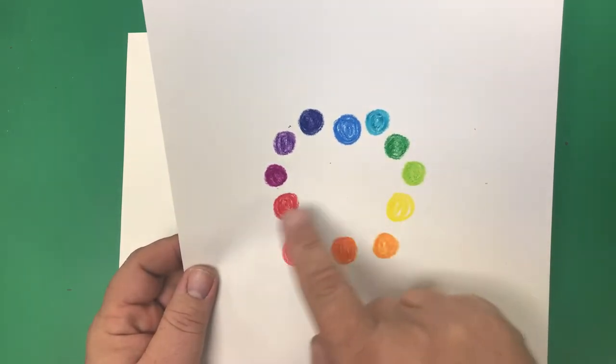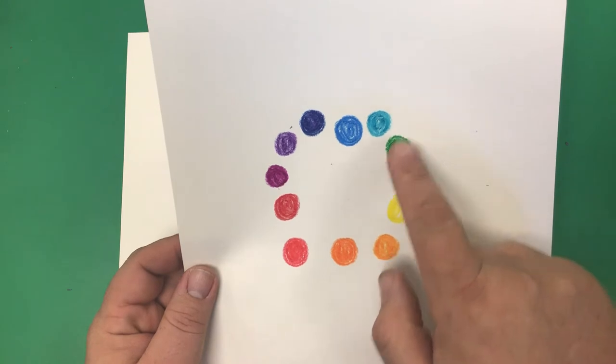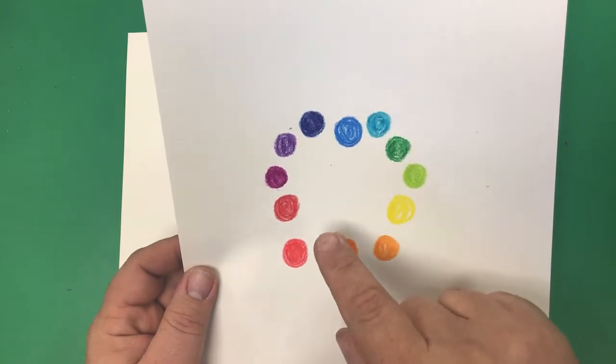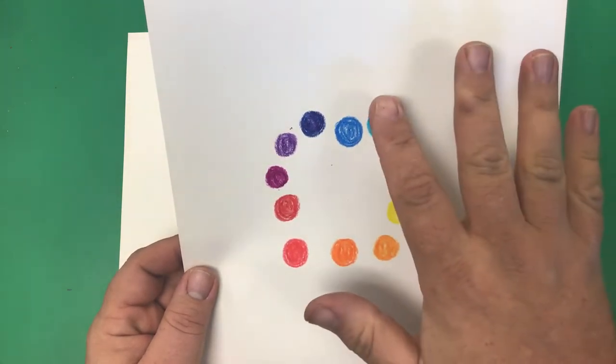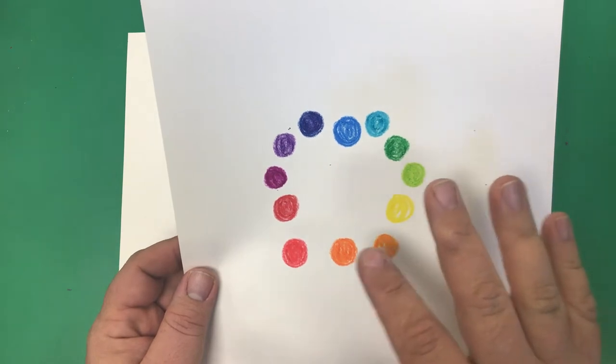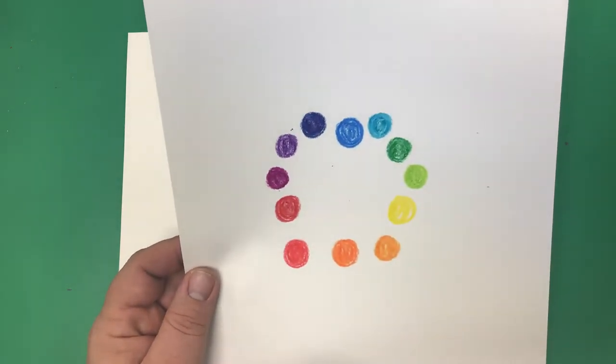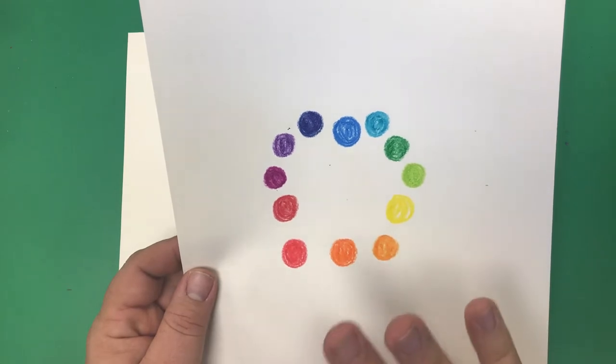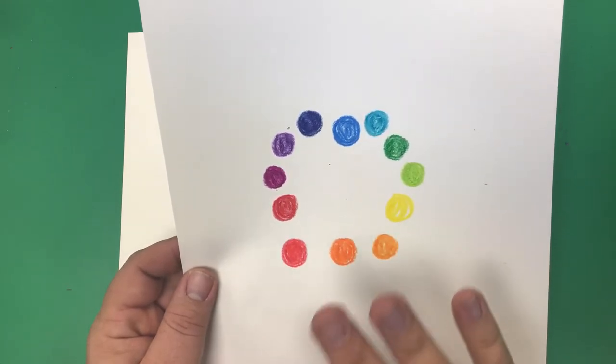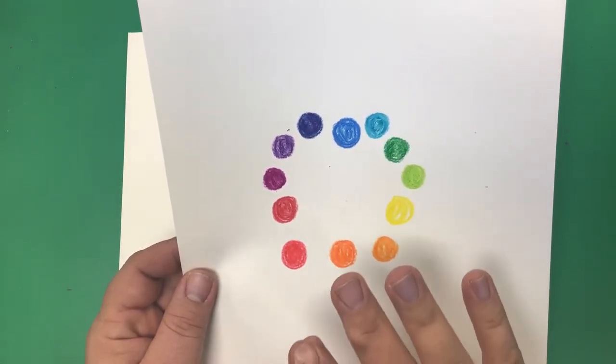So we have our primaries blue, red, yellow, secondaries green, orange, purple, and then we have our intermediate tertiary colors blue green, yellow green, yellow orange, red orange, red violet, and blue violet. So an analogous color are colors that are beside each other on the color wheel.